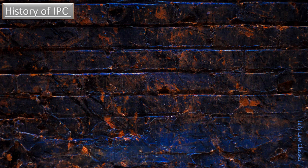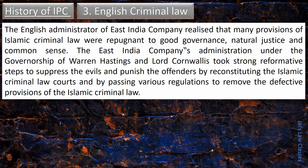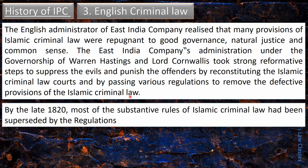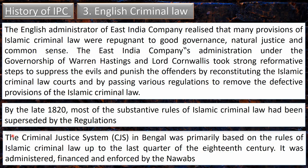The English criminal law came into existence because of the East India Company's arrival in India. The English administrators of the East India Company realized that many provisions of Islamic criminal law were repugnant to good governance, natural justice, and common sense. Under the governorship of Warren Hastings and Lord Cornwallis, strong reformative steps were taken to suppress the evils by reconstituting the Islamic criminal law courts and passing various regulations to remove defective provisions. By the late 1820s, the most substantive rules of Islamic criminal law had been superseded by these English law regulations.